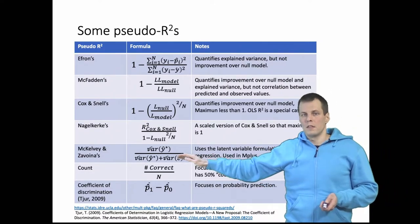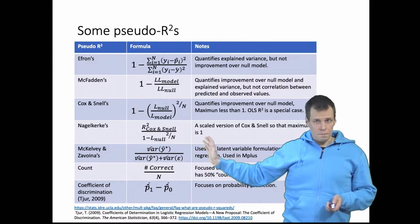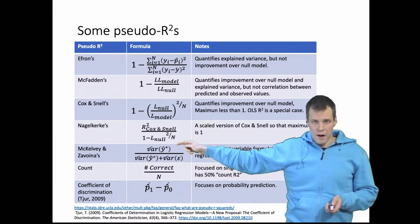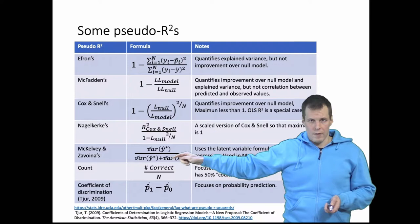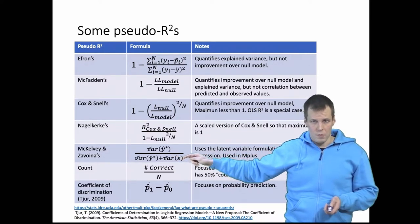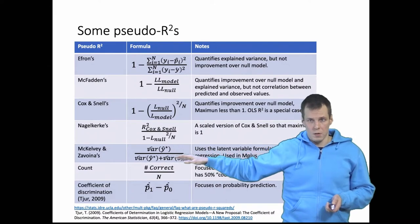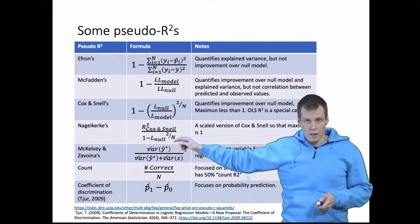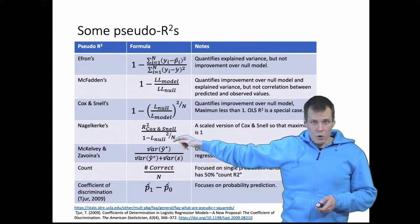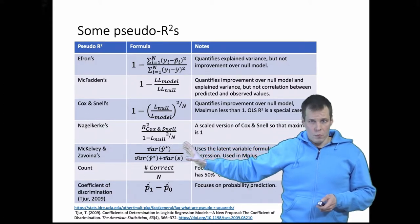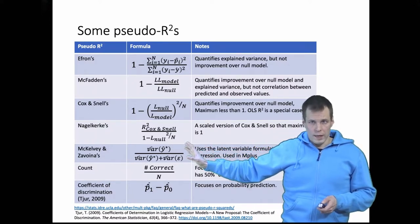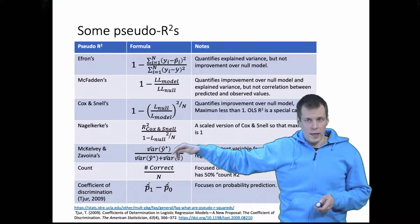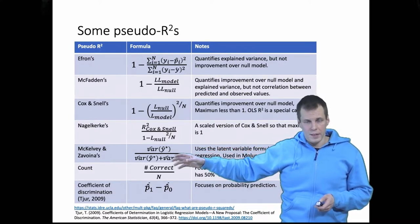The McKelvey and Zavoina pseudo R squared is an R squared in the sense that it quantifies how much variation is explained: variation explained divided by variation explained plus variation of the error term. If applied to normal regression you get the normal R squared. The difference is that instead of looking at predictions in the observed variable, it uses the latent variable formulation of the logistic regression model, assessing how well the model explains the latent response variable underlying the observed response.